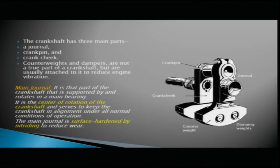The main journal is that part of the crankshaft that is supported by and rotates in a main bearing. It is the center of rotation of the crankshaft and serves to keep the crankshaft in alignment under all normal conditions of operation. The main journal is surface hardened by nitriding to reduce wear.